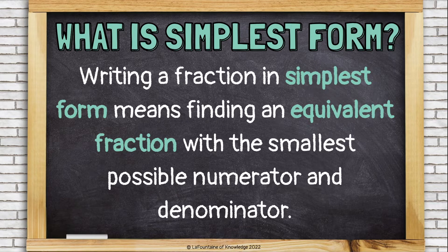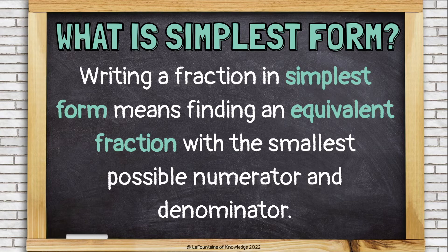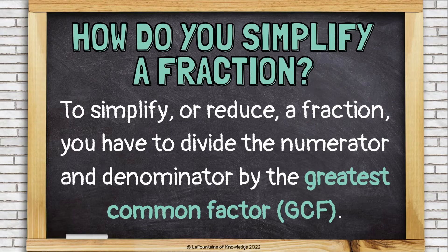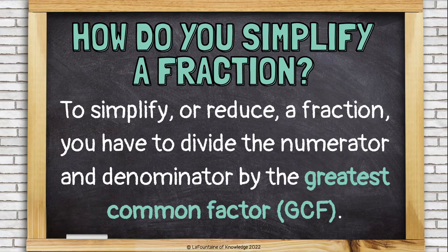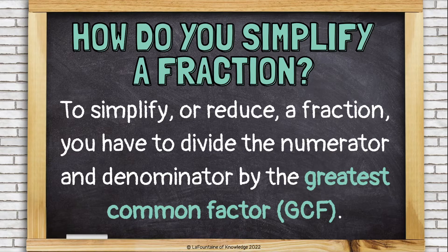Writing a fraction in simplest form means finding an equivalent fraction with the smallest possible numerator and denominator. How do you simplify a fraction? To simplify or reduce a fraction, you have to divide the numerator and denominator by the greatest common factor, the GCF.